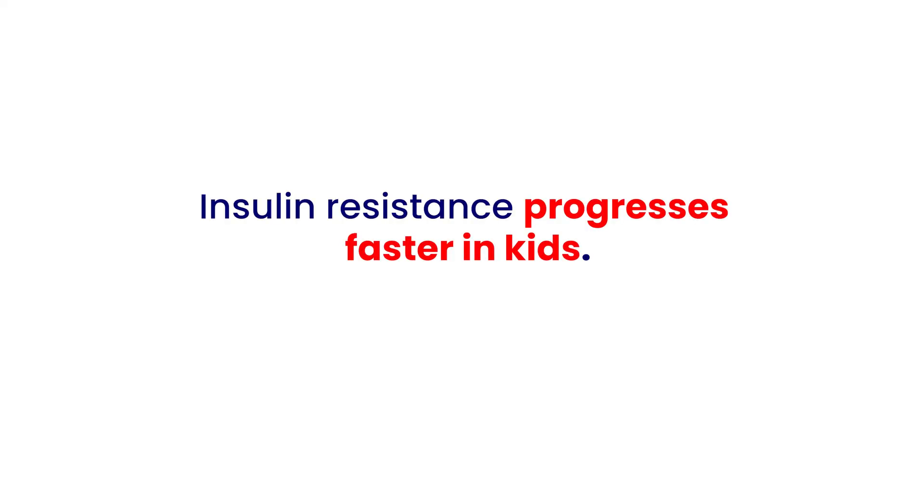Obesity in children not only is a purer form of the disease, but as I said before, it's more aggressive. So what does that mean? It means if you have insulin resistance — which is basically what diabetes is — it progresses faster in kids.